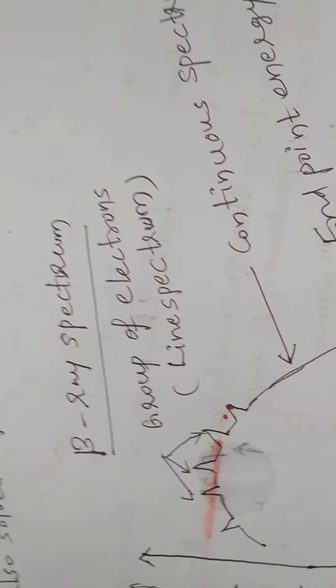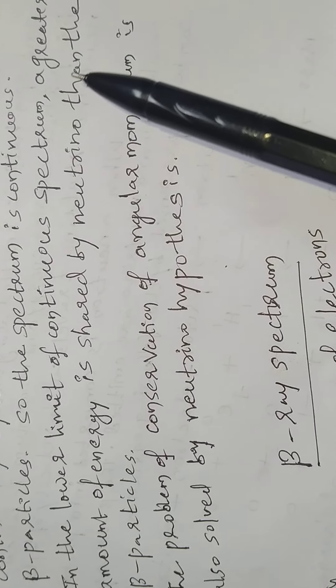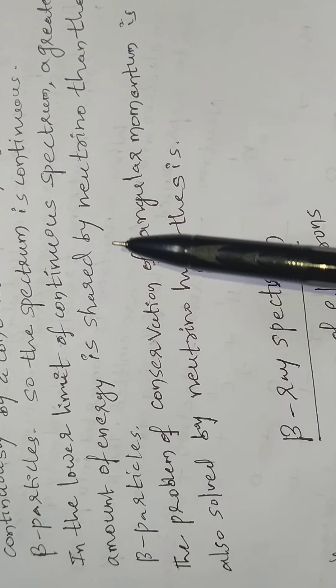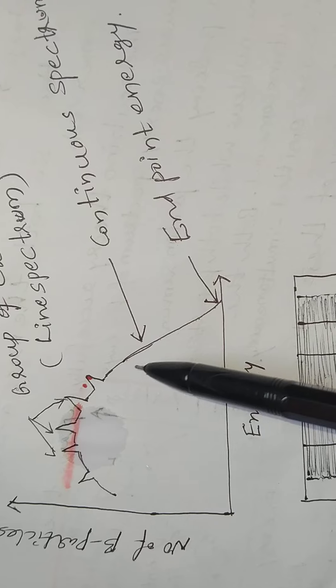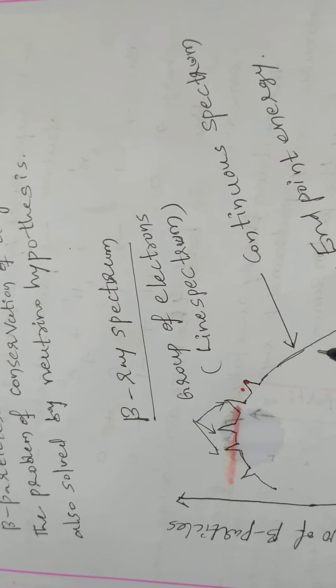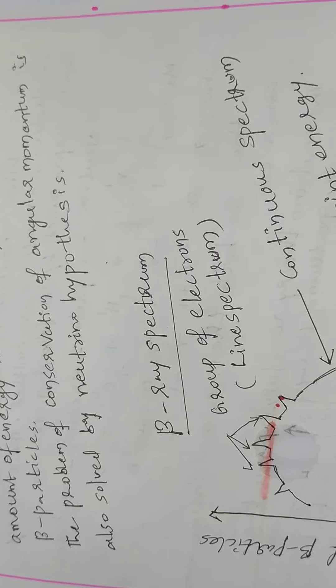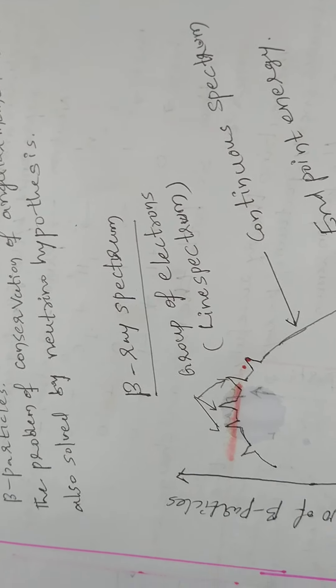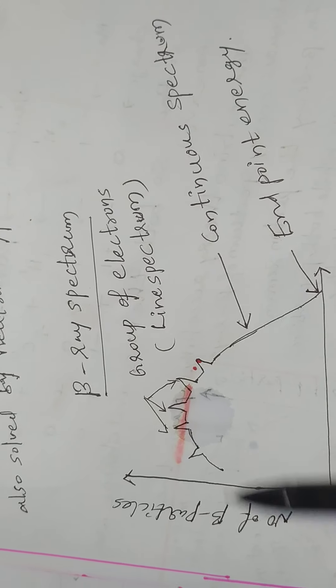The continuous spectrum indicates that in the lower limit of the spectrum, a greater amount of energy is shared by the Neutrino than by the beta particles. The problem of conservation of angular momentum is also solved by the Neutrino hypothesis. In this way, the Neutrino hypothesis successfully explains the beta ray spectrum.